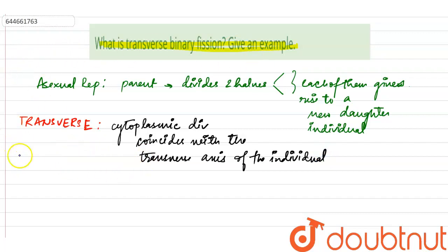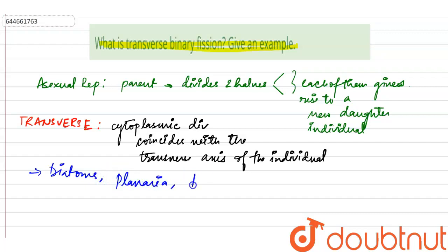Examples of transverse binary fission include diatoms, planaria, and also paramecium. These are the examples of transverse binary fission.